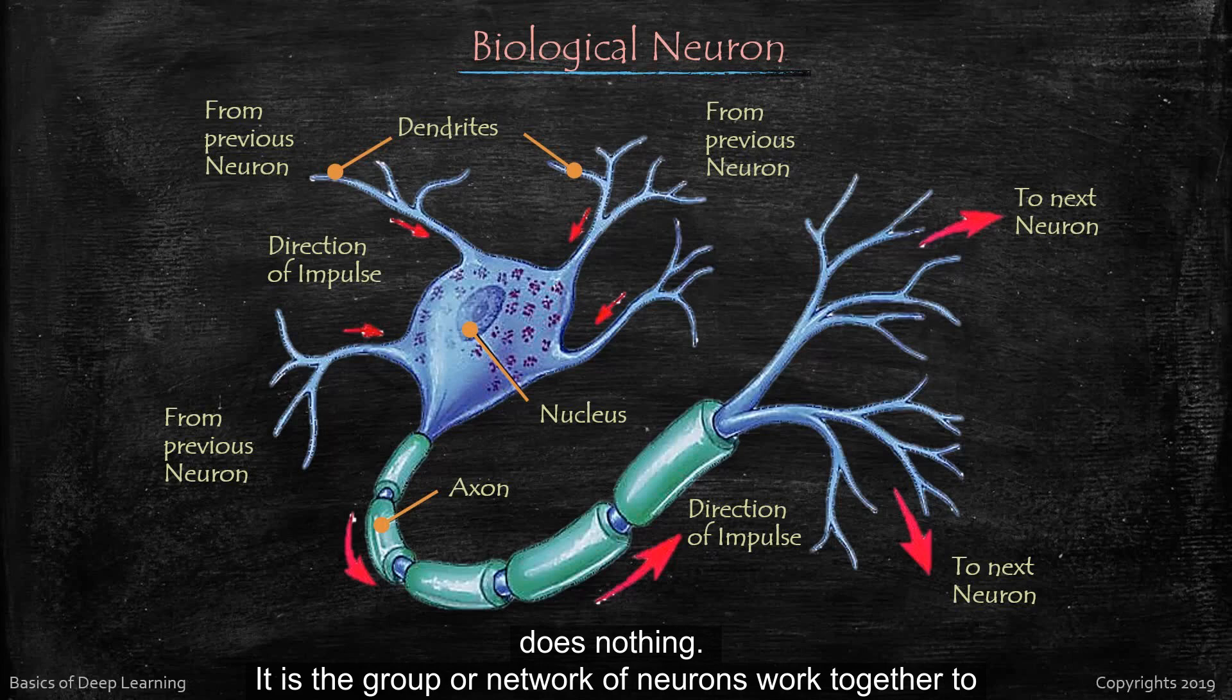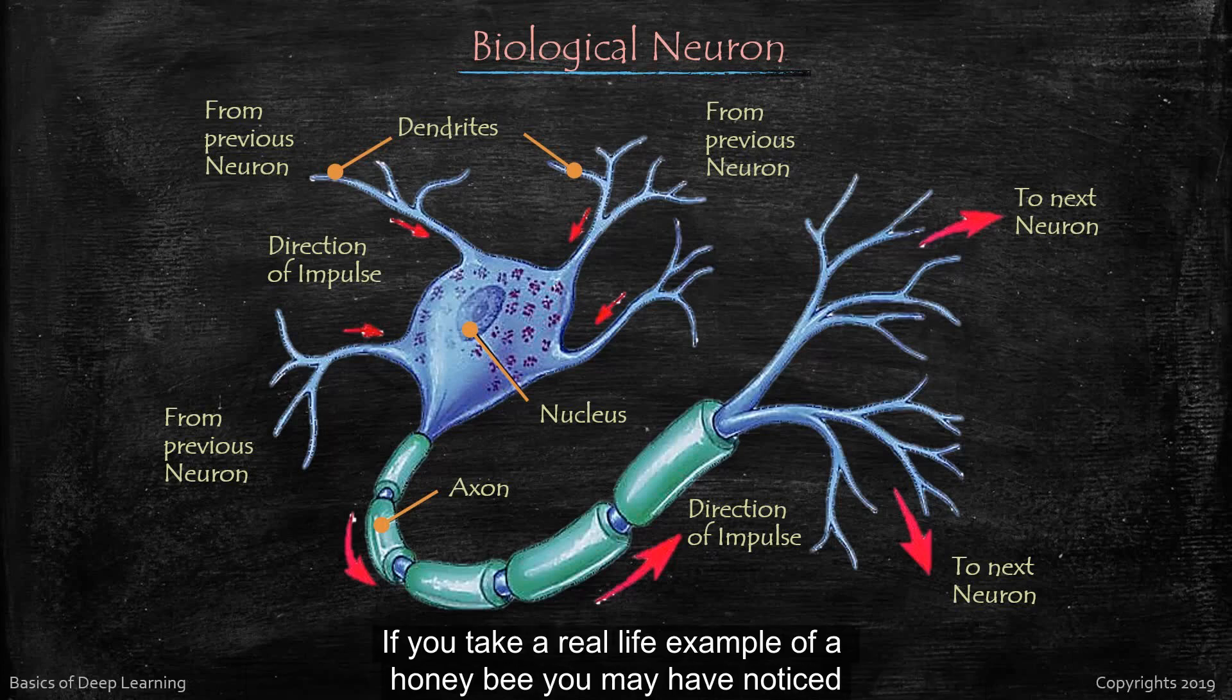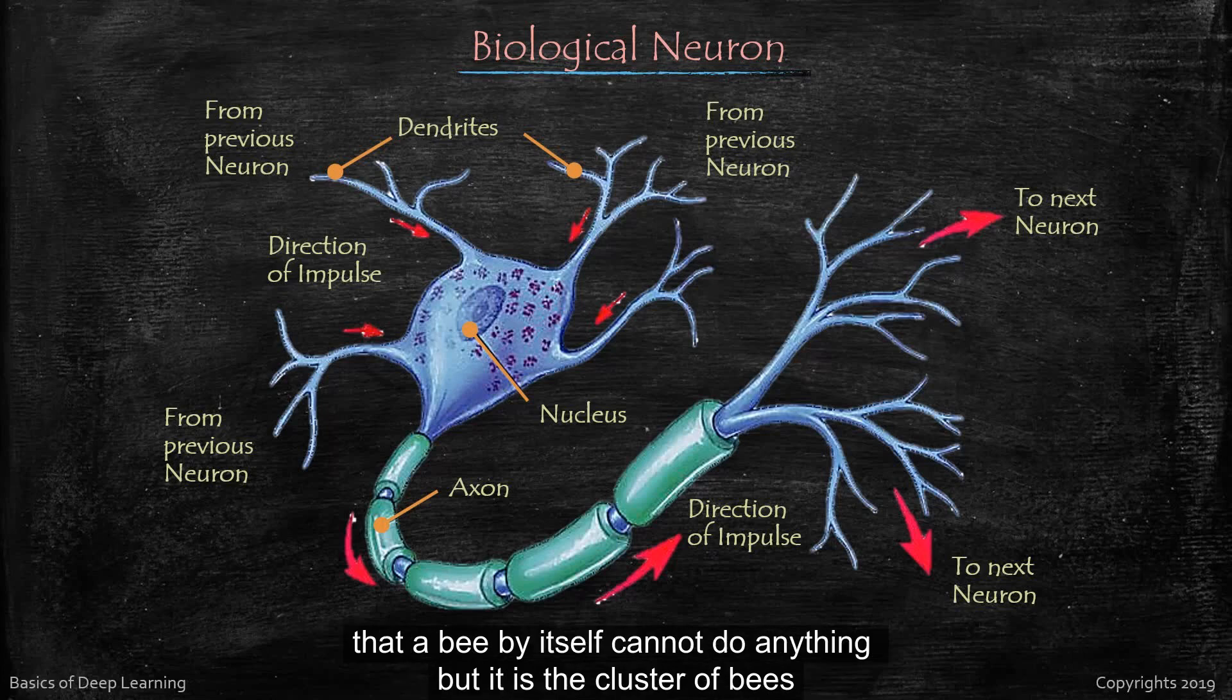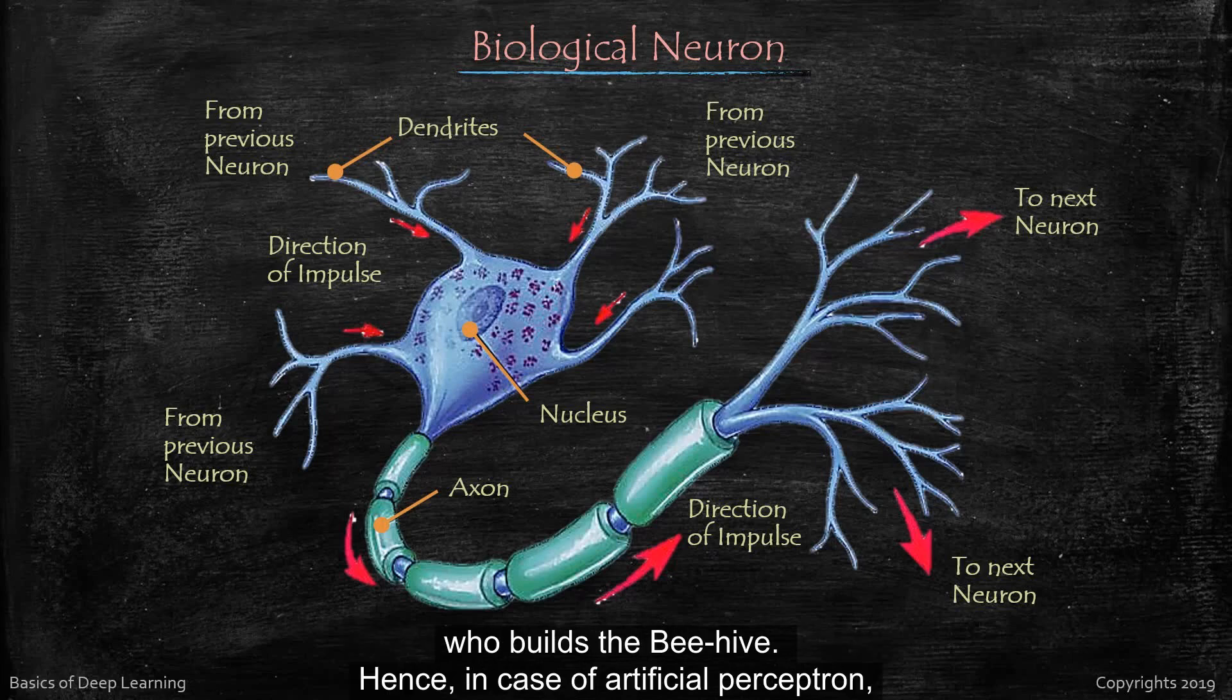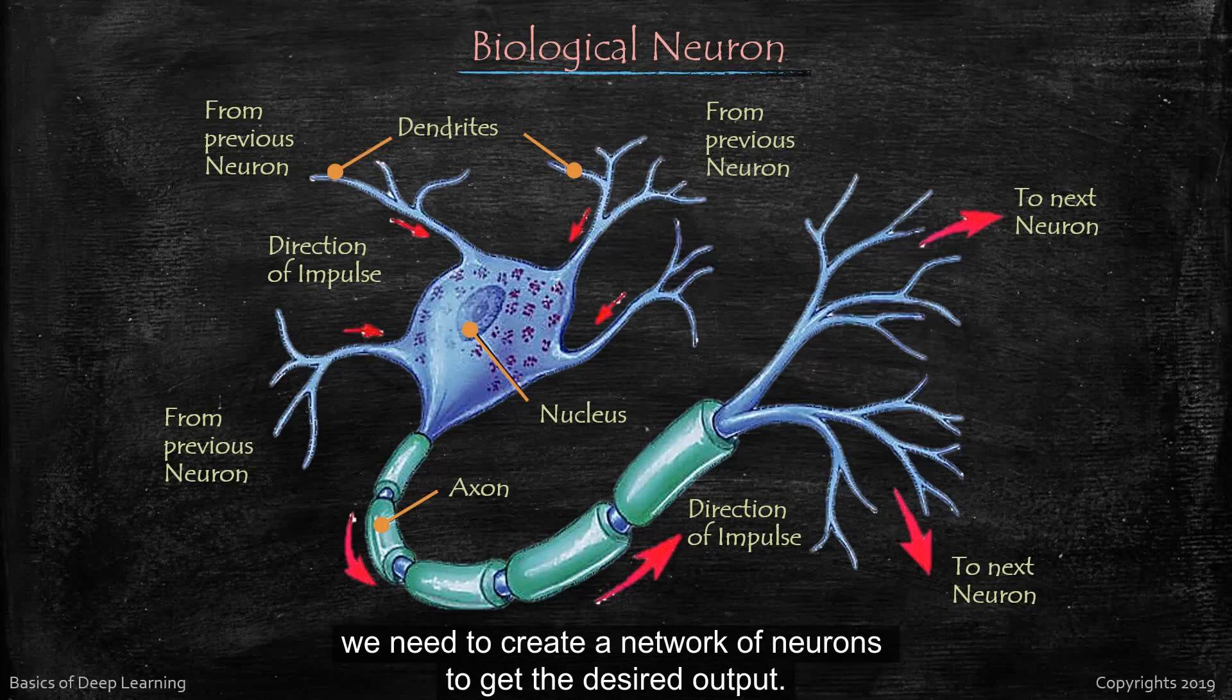Here a single neuron by itself does nothing. It is the group or network of neurons work together to generate the desired output. If you take a real-life example of a honeybee you may have noticed that a bee by itself cannot do anything, but it is the cluster of bees who builds the beehive.